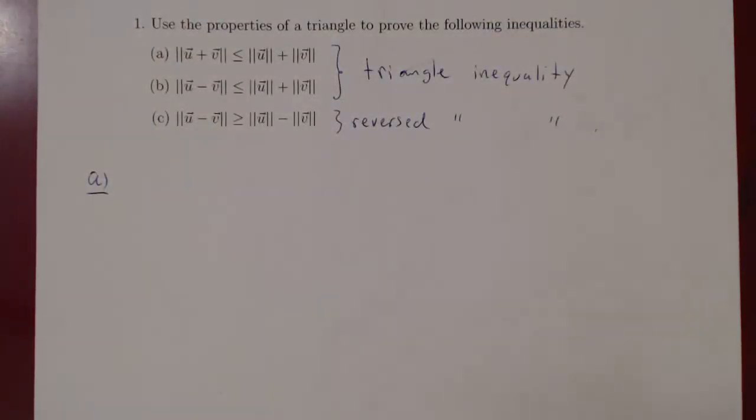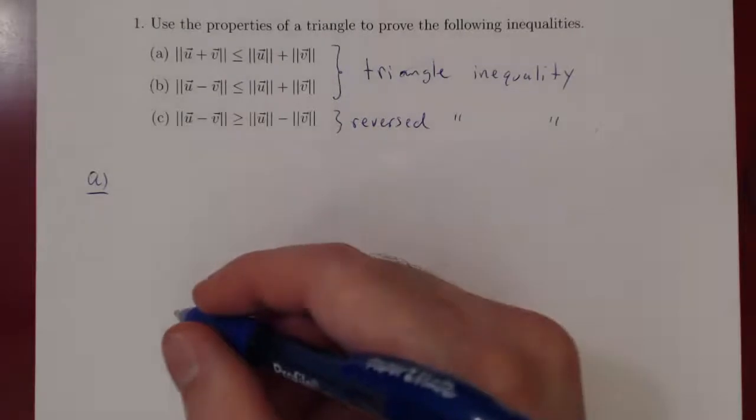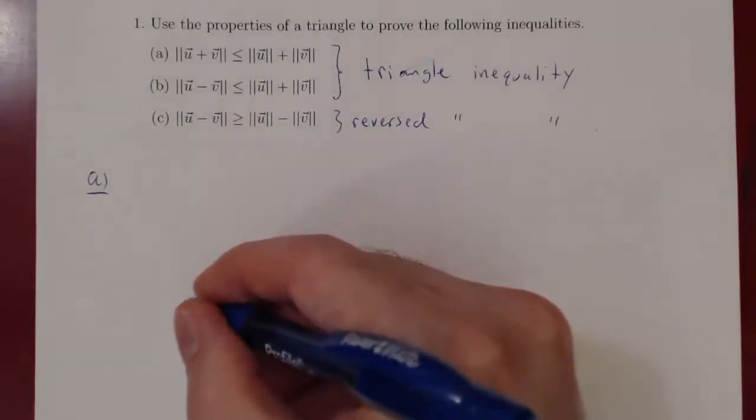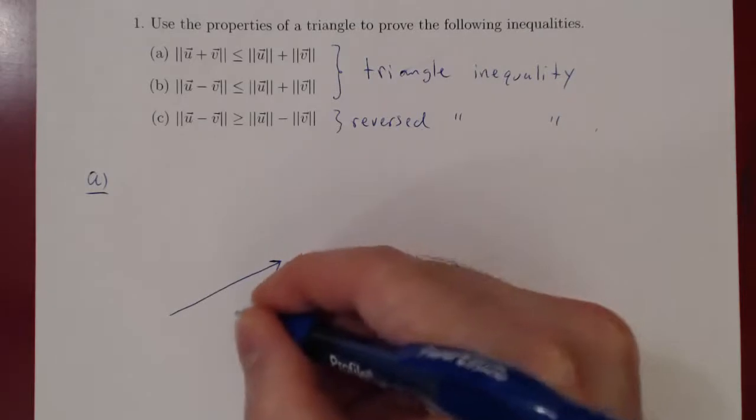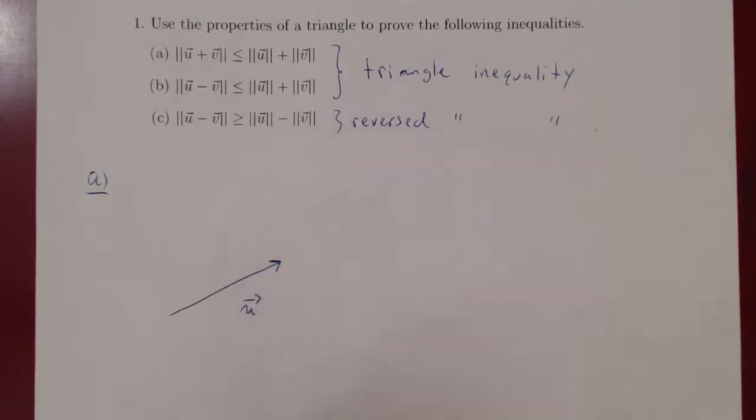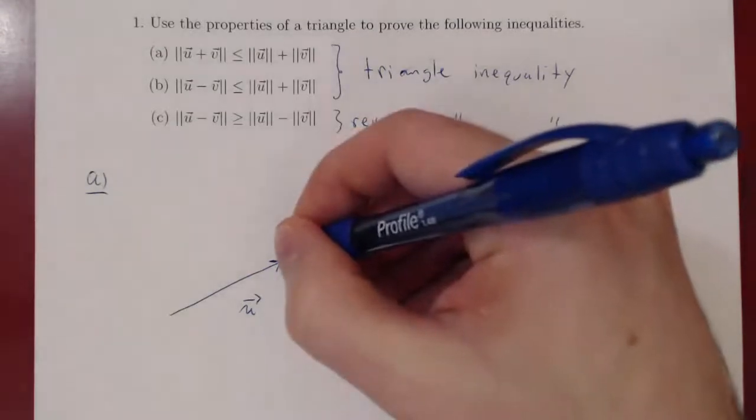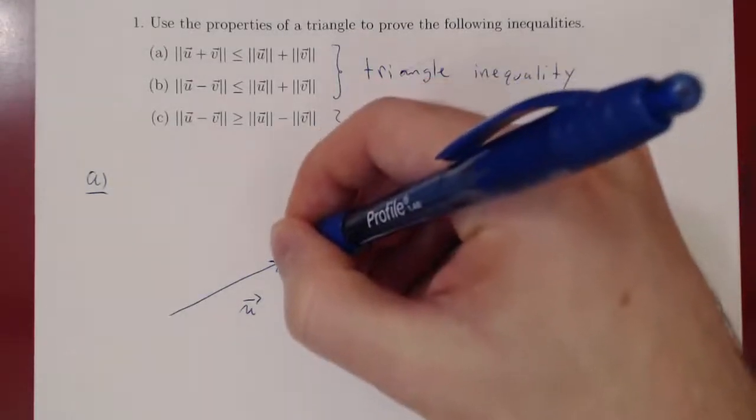Again, we can position vectors anywhere we want in space. So assume that the vector u is here, and I'll position vector v so that its initial point lies on the terminal point of vector u.